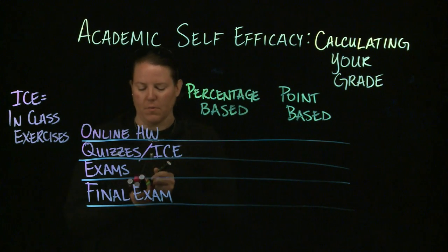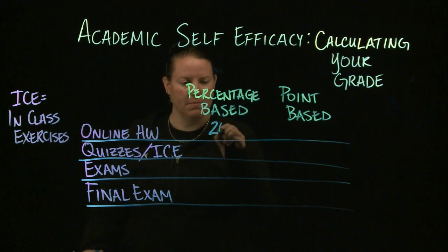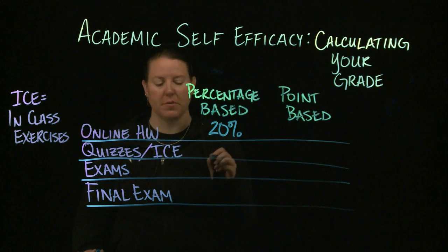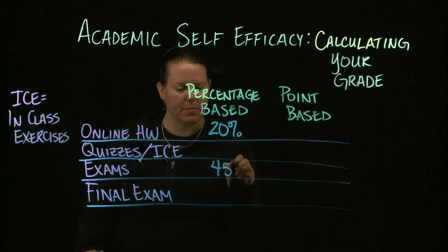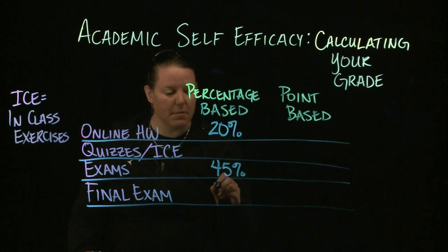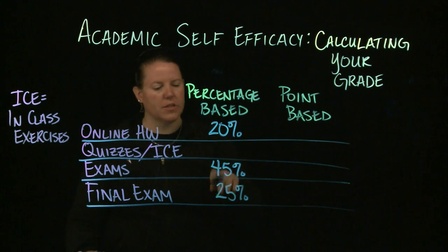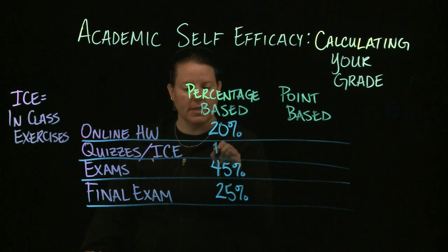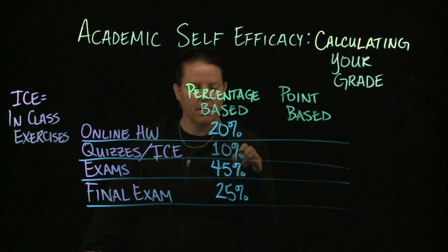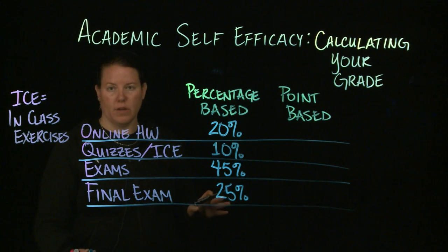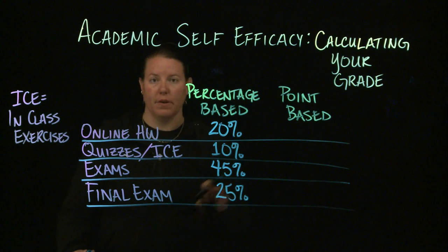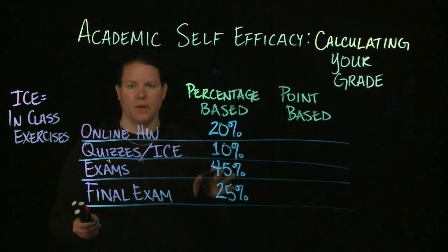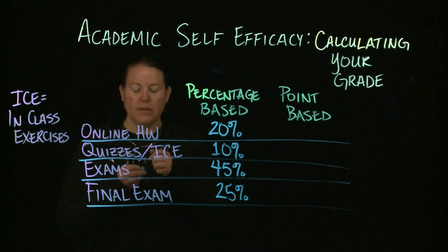Let's say that online homework is worth 20%, exams are worth 45%, final exam 25%. So that's a grand total of 70% of the class is exams, 20% is homework, and quizzes have to be 10%. If you add all of these together, it should be 100% in the end.